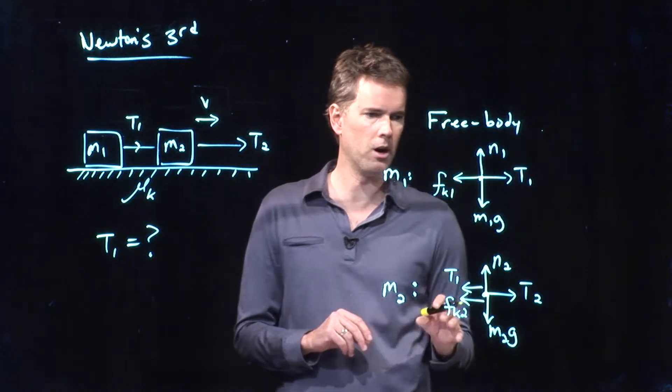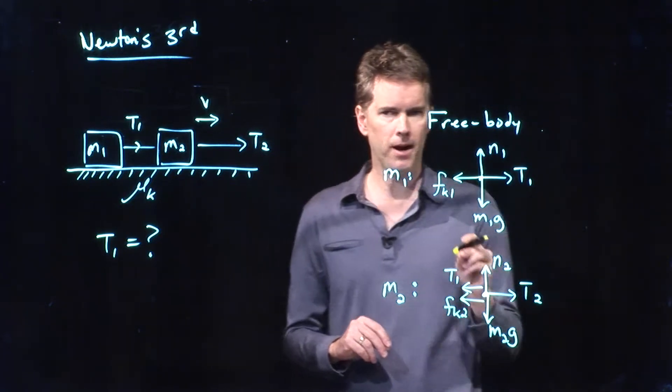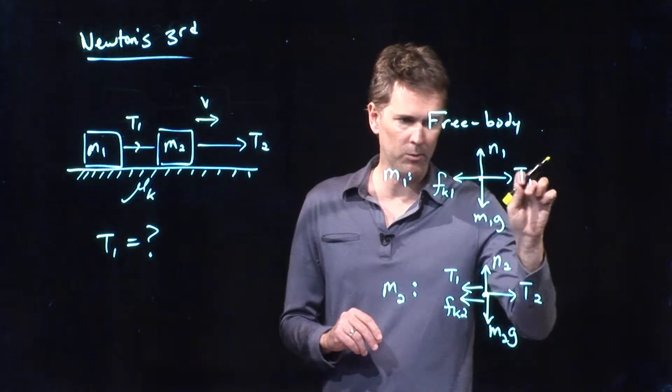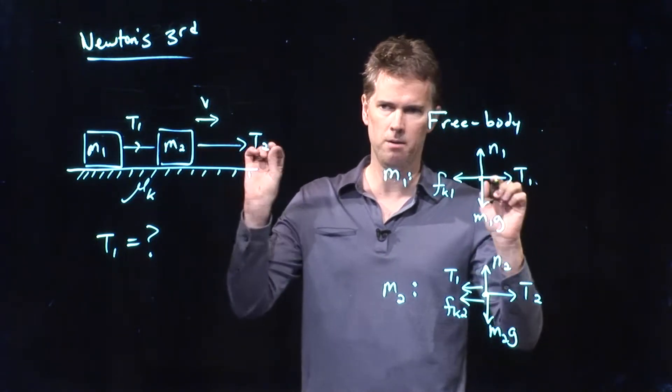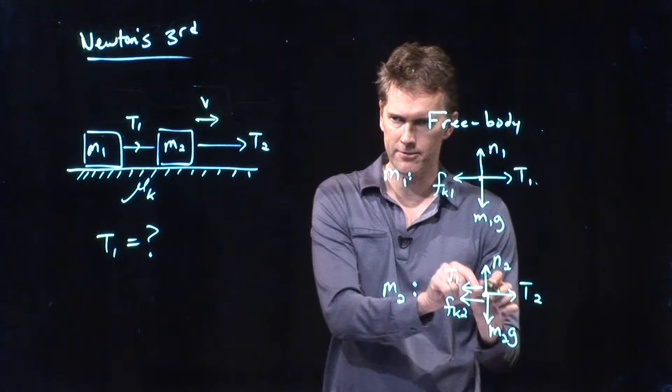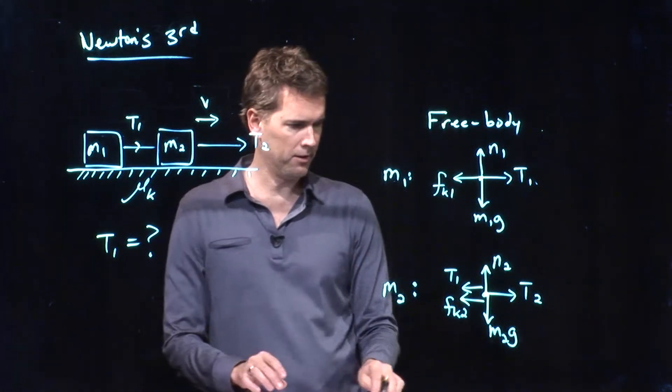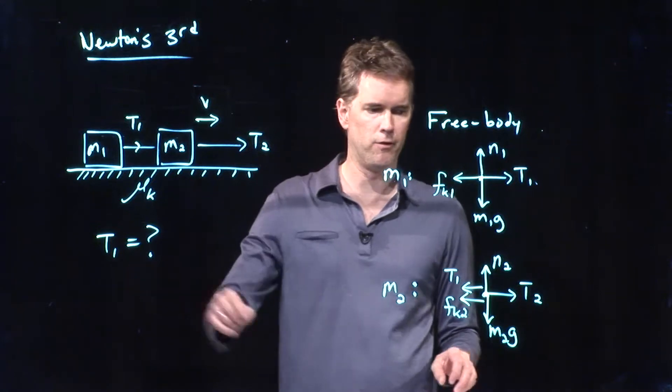What are the Newton's third law pairs? It's T1. T1 going to the right on mass 1 means T1 going to the left on mass 2. Let's see if we can solve this thing now for T1.